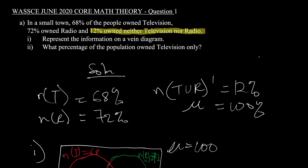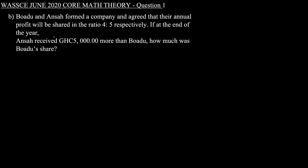Don't forget to like and subscribe, and if you have questions, leave them in the comment section. We'll now move on to question 1B. Buedu and Ansar formed a company and agreed that their annual profits will be shared in the ratio 4 to 5 respectively. If at the end of the year Ansar received 5,000 more than Buedu, how much was Buedu's share?